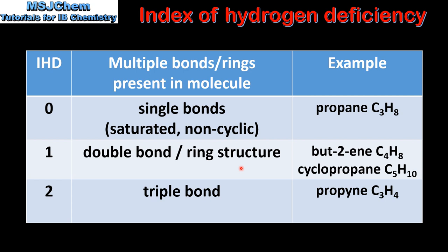An example is but-1-ene, which has a carbon to carbon double bond, and cyclopropane, which is a cyclic molecule with a ring structure. And finally, a value of 2 for the index of hydrogen deficiency means the molecule has a triple bond, and an example is propyne, which has a carbon to carbon triple bond.